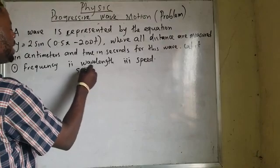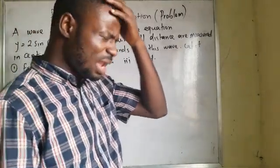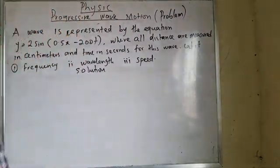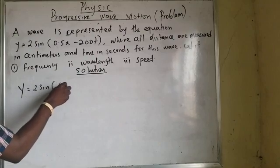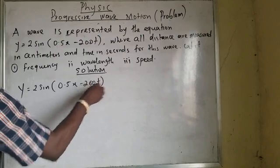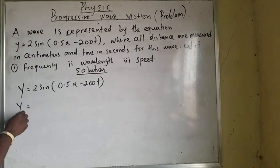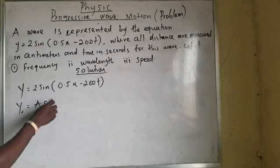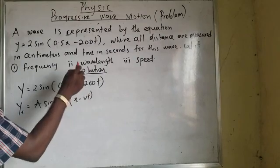Now look at this problem. I will be using the first three equations to explain this problem. Any one that is convenient for you, you are good to go. Let me first use the first equation. The first equation lets us know: y equals A sin of pi bracket of x minus vC. That is equation 1.